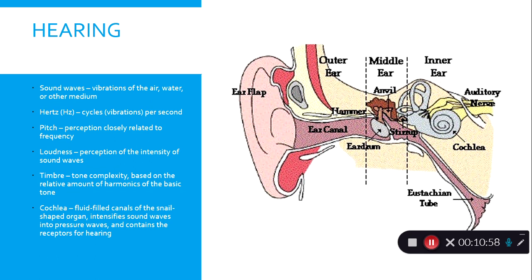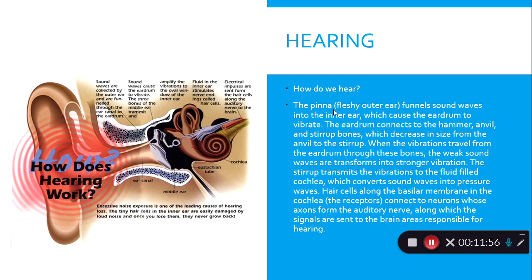Now we're covering hearing. We hear sound waves — vibrations in the air, water, or another medium. Hertz refers to cycles per second. Pitch perception is closely related to frequency, and loudness is the perception of sound wave intensity. Timbre is tone complexity based on the relative amount of harmonics. The cochlea is a fluid-filled, snail-shaped organ that intensifies sound waves into pressure waves and contains the receptors for hearing.